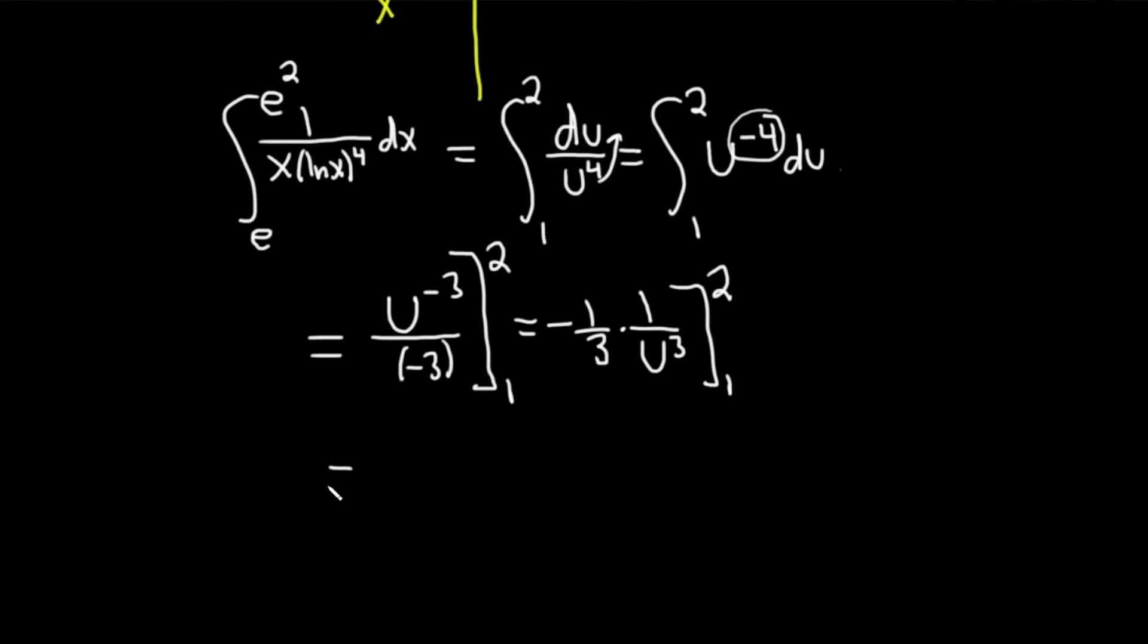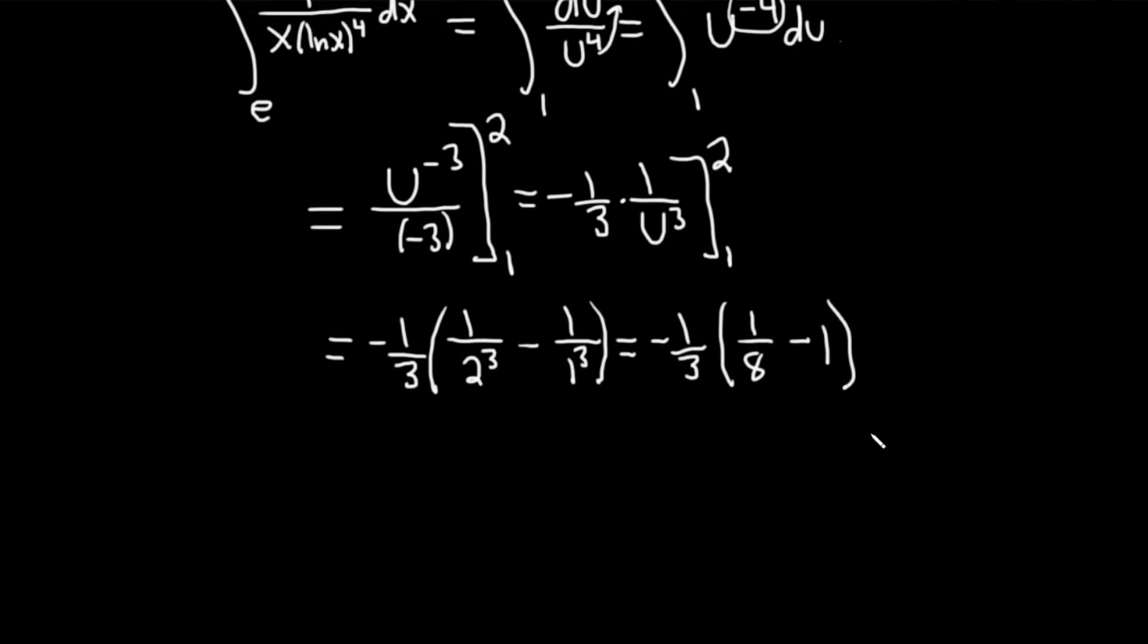Okay, first we plug in the top number. So this is negative 1 third. Parentheses, I'm going to plug in the top number. We get 1 over 2 cubed. Then you always subtract, and then it's 1 over 1 cubed. This is equal to negative 1 third times, 1 over 2 cubed is 1 over 8, minus, and then 1 over 1 cubed is just 1. This is equal to negative 1 third. Because we're subtracting 1 from 1 over 8, you can write 1 as a number over 8. We can write it as 8 over 8.